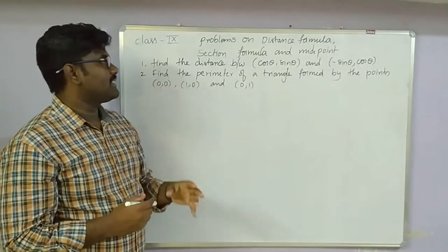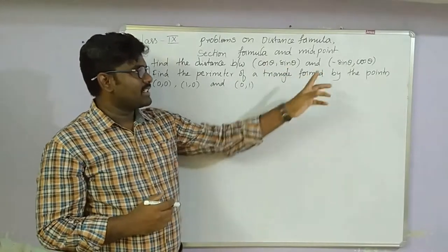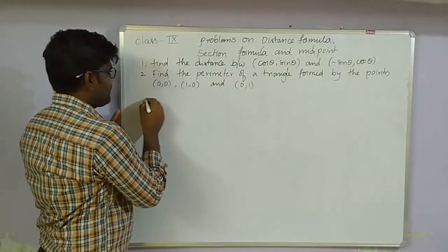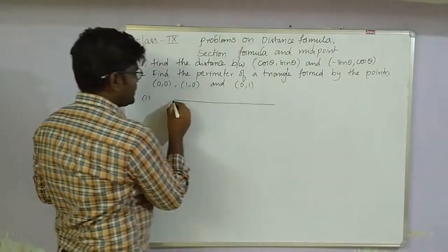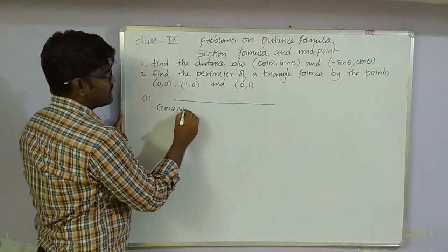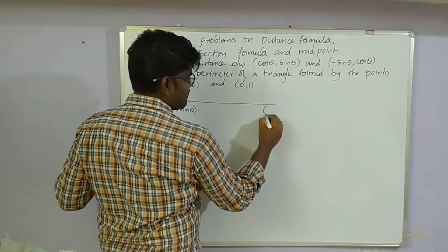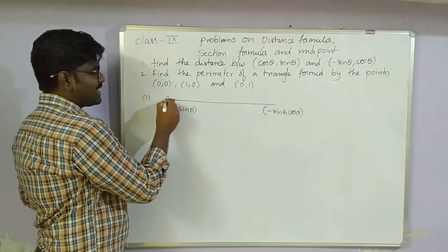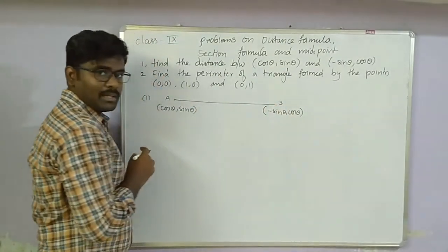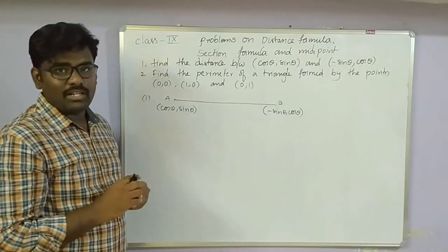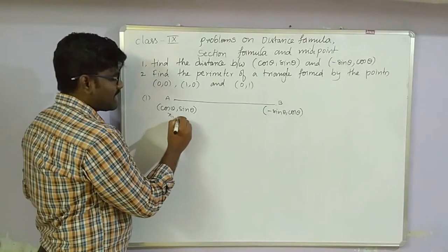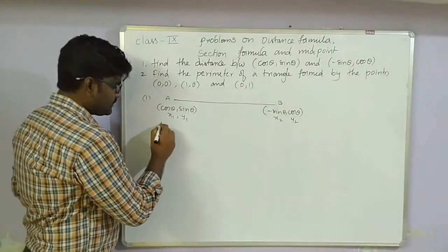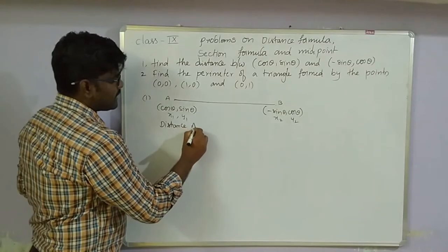The first problem: find the distance between the points (cosθ, sinθ) and (-sinθ, cosθ). Here the line segment joins two points. Let point A be (cosθ, sinθ) and point B be (-sinθ, cosθ). We treat these as (x1, y1) and (x2, y2) and apply the distance formula.